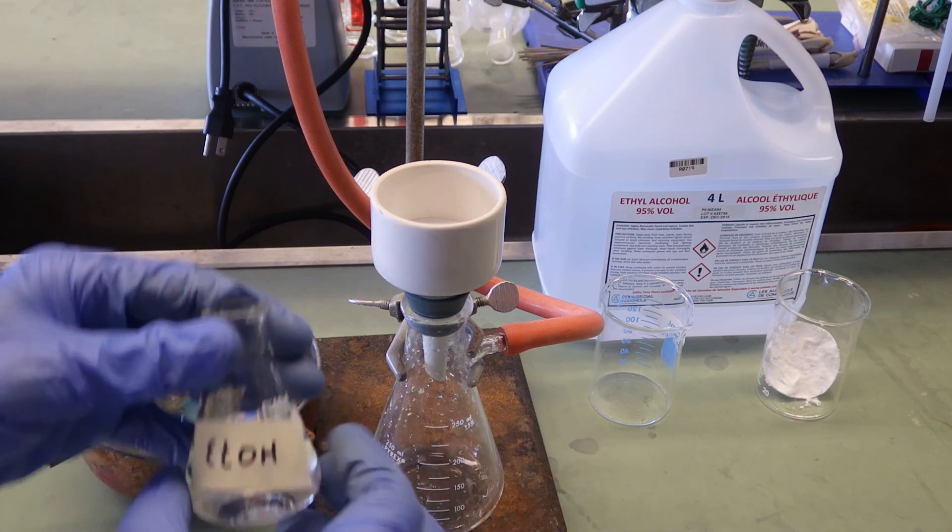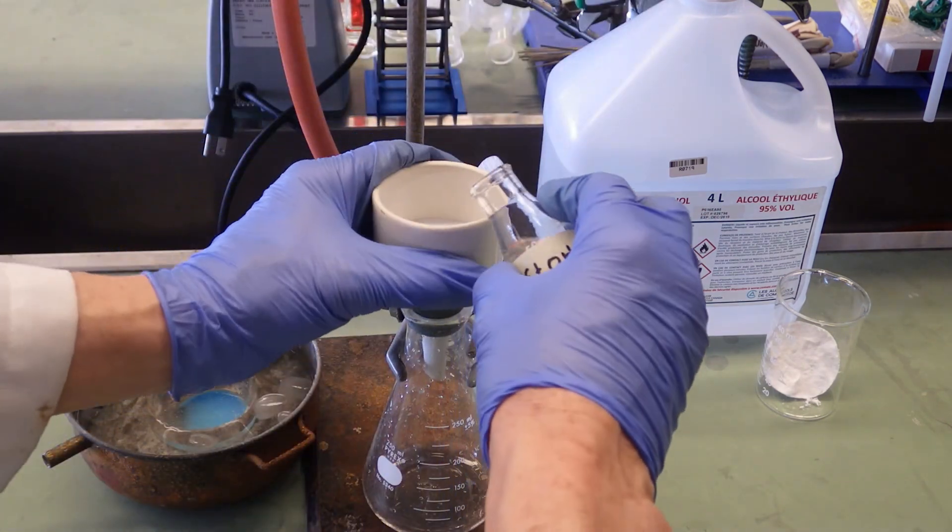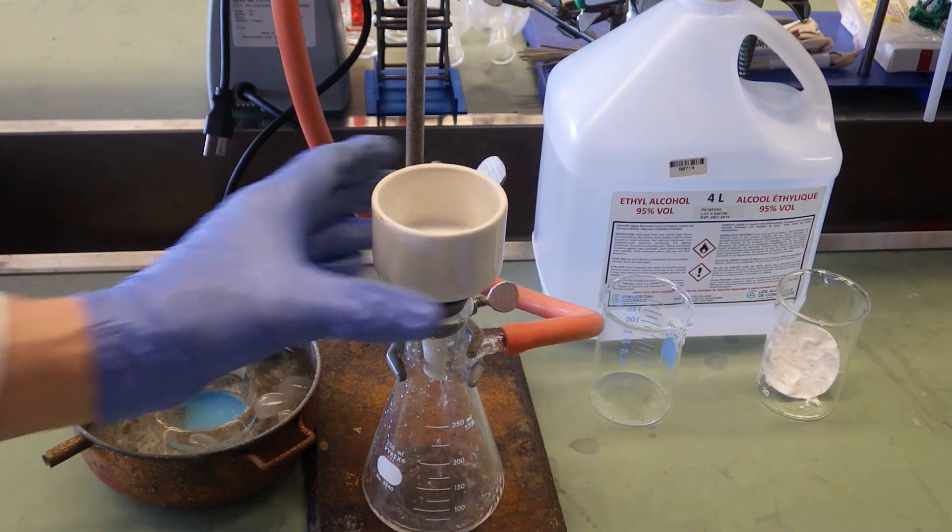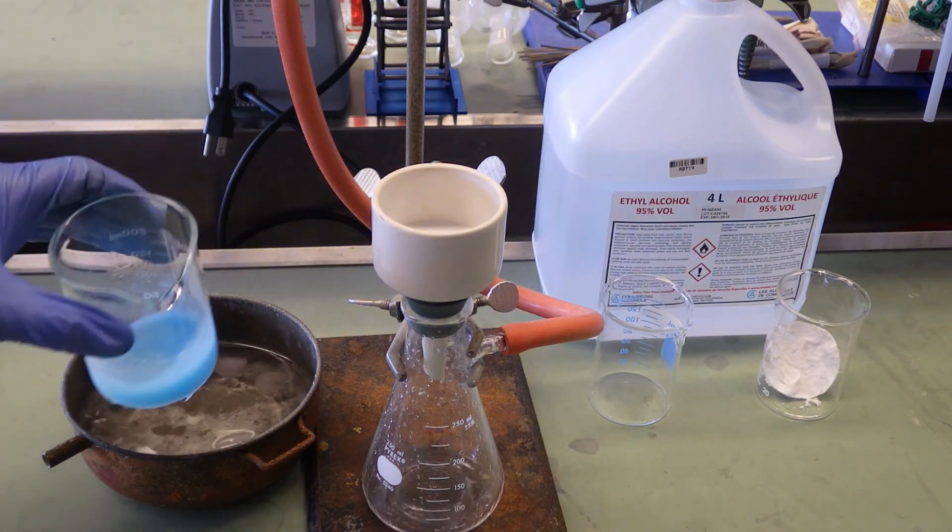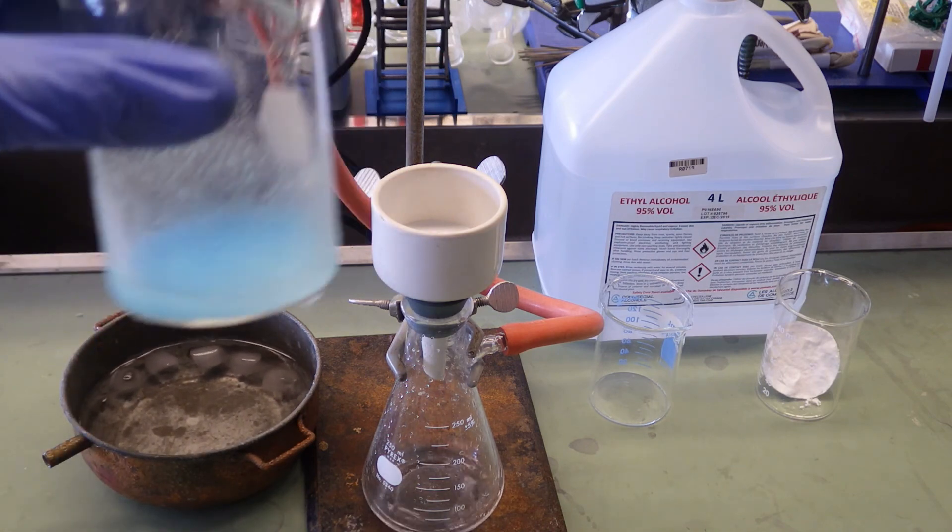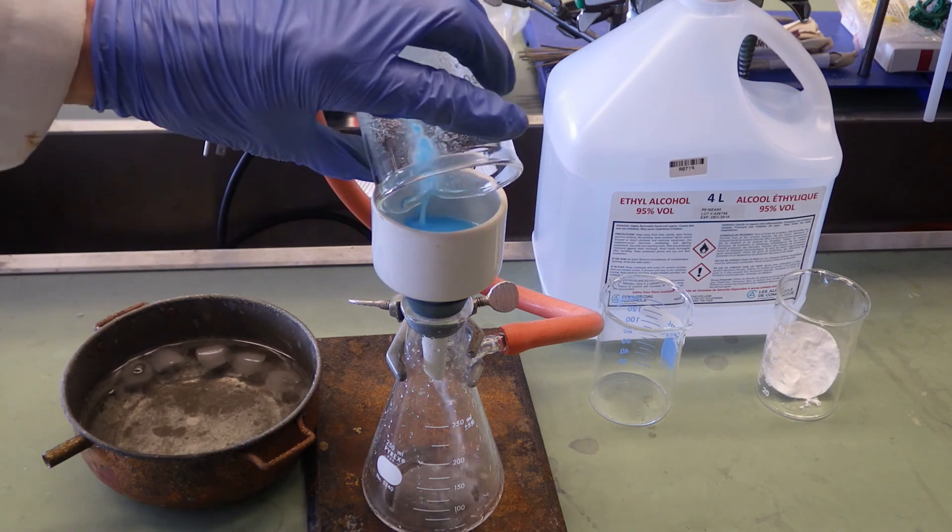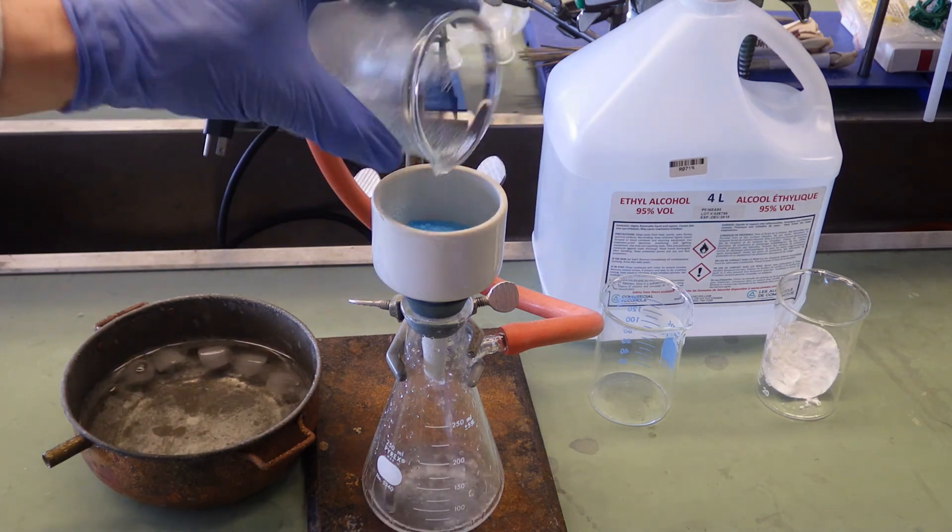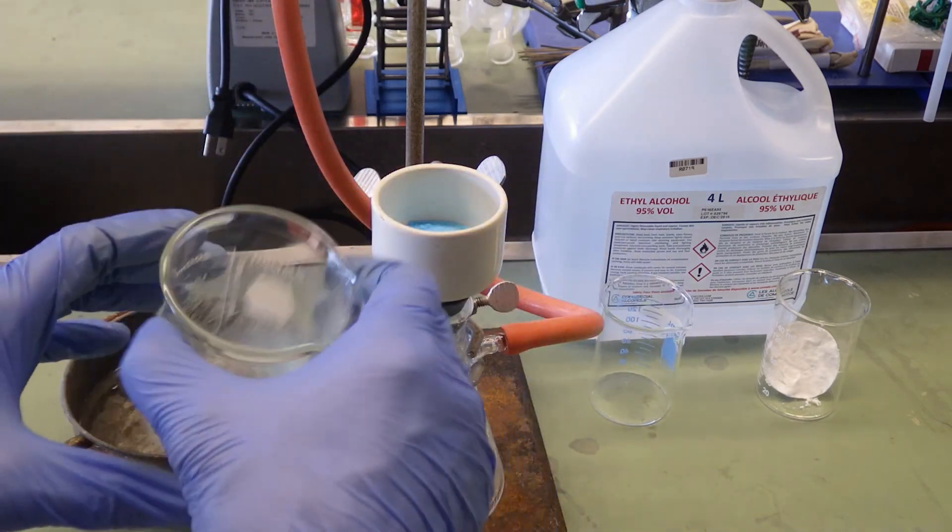This time we're going to wet it with ethanol rather than water. Remember, water dissolves CSP—we don't want to dissolve our precipitate. Once again, try and get the solids evenly distributed over the entire surface of the filter paper. Don't make a cone in the center. And likewise with the wash, spread the wash evenly over the entire surface.